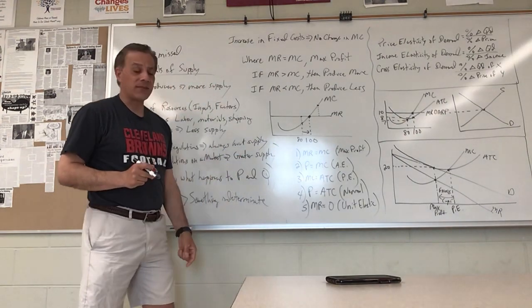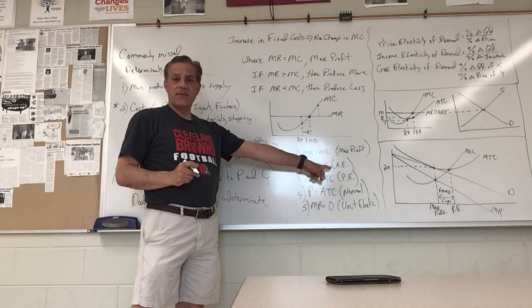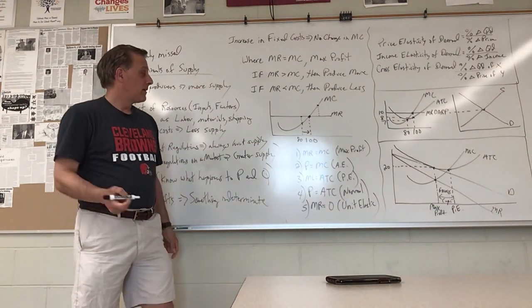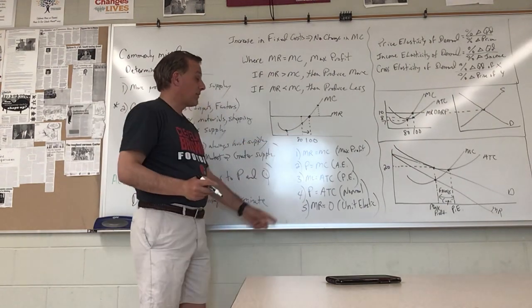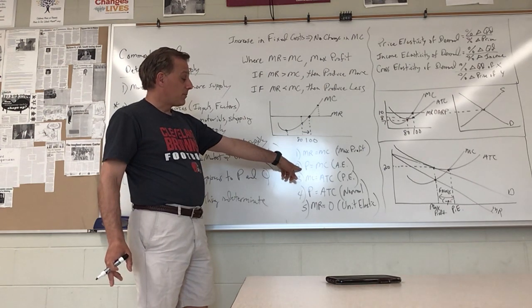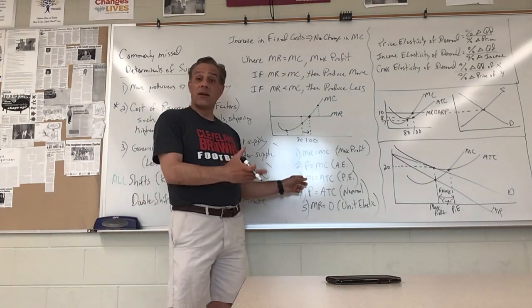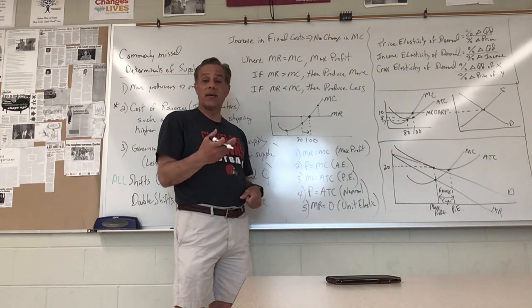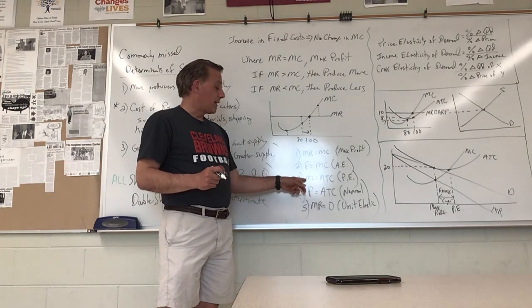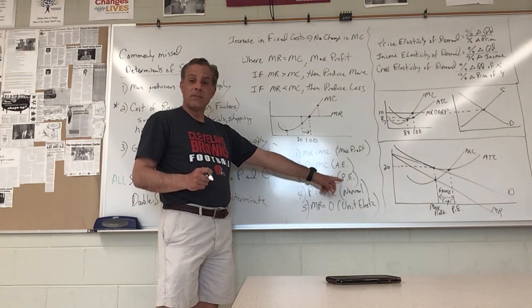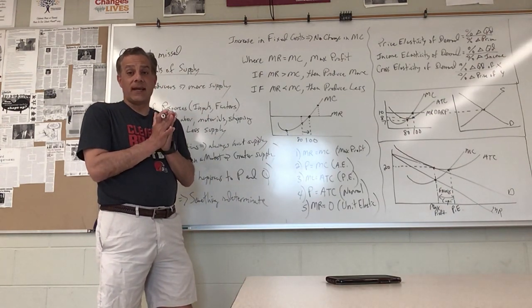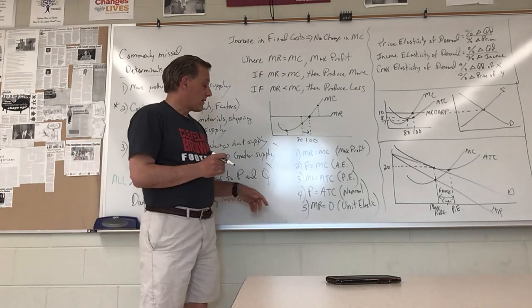Know your five different intersections. MR equals MC is max profit and allocative efficiency. Price equals marginal cost where marginal cost hits the demand curve - remember price is always on the demand curve. Purple monkeys chase after everybody, my cousins are the coolest people ever - productive efficiency.